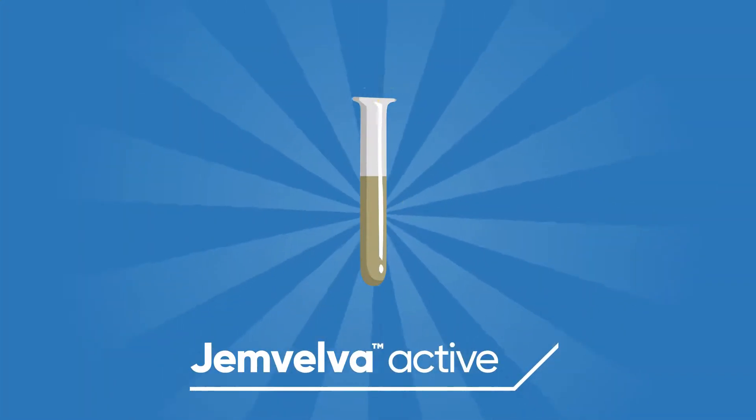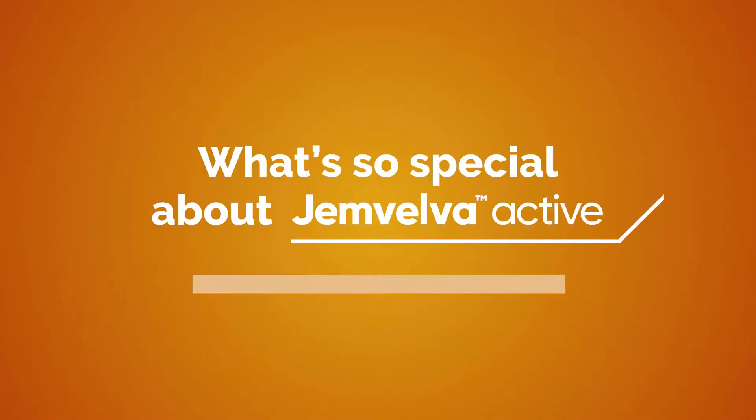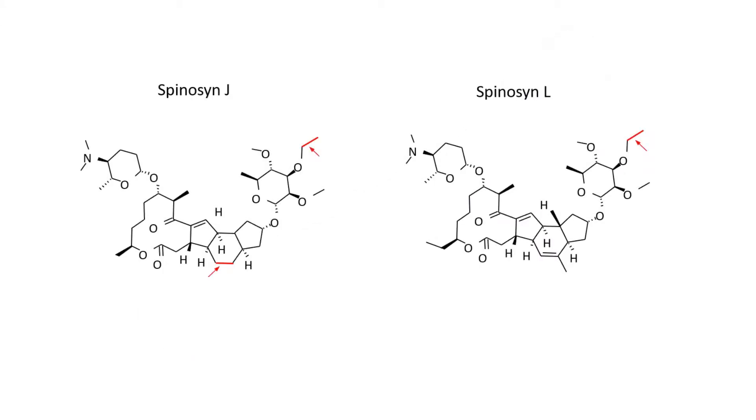Like Kalkova active, Gemvelva is derived from fermentation of the soil bacterium Saccharopolisporas spinosa. Then, very minor chemical modifications make it more active and stable.